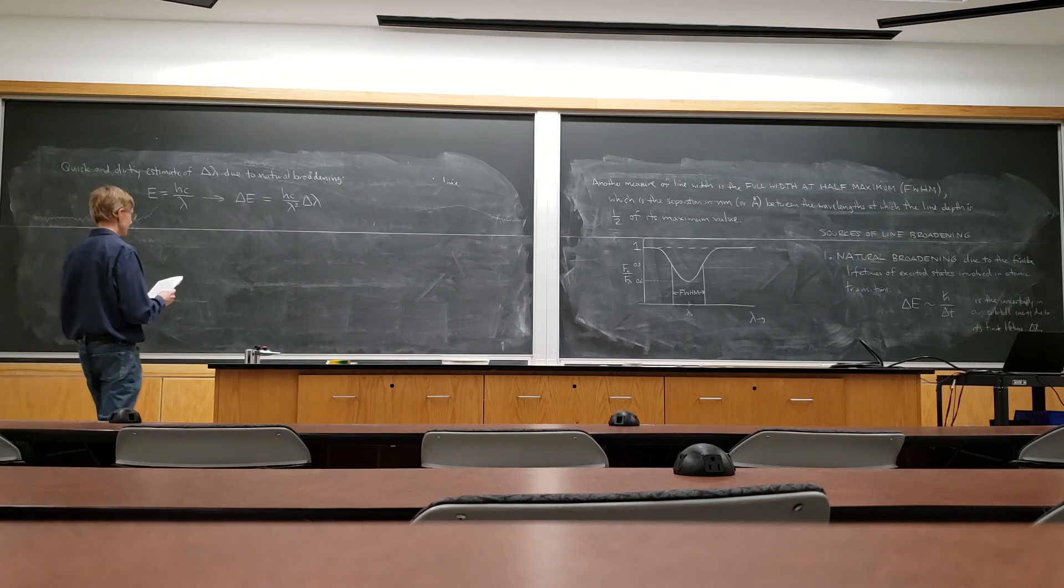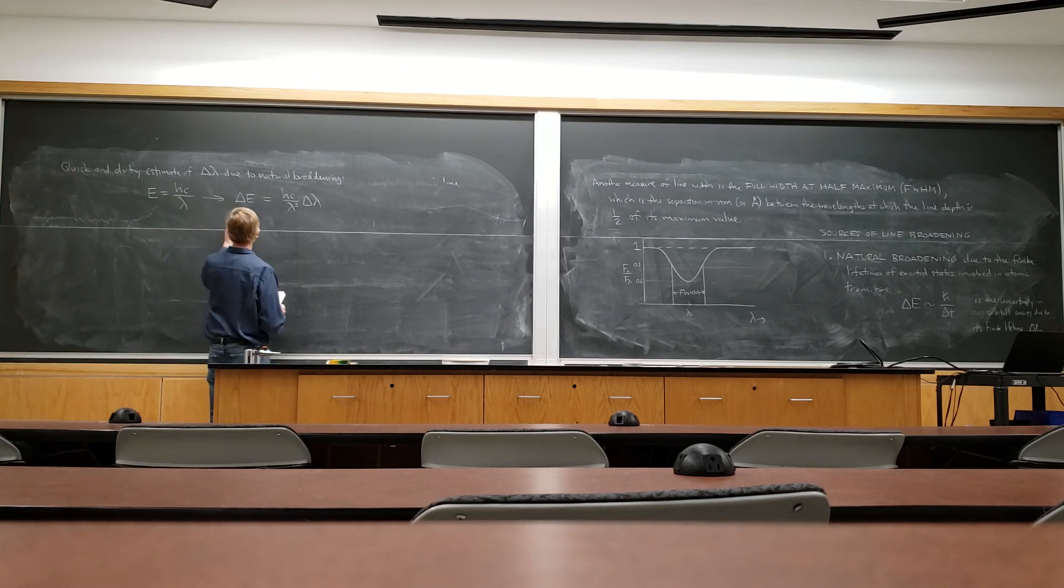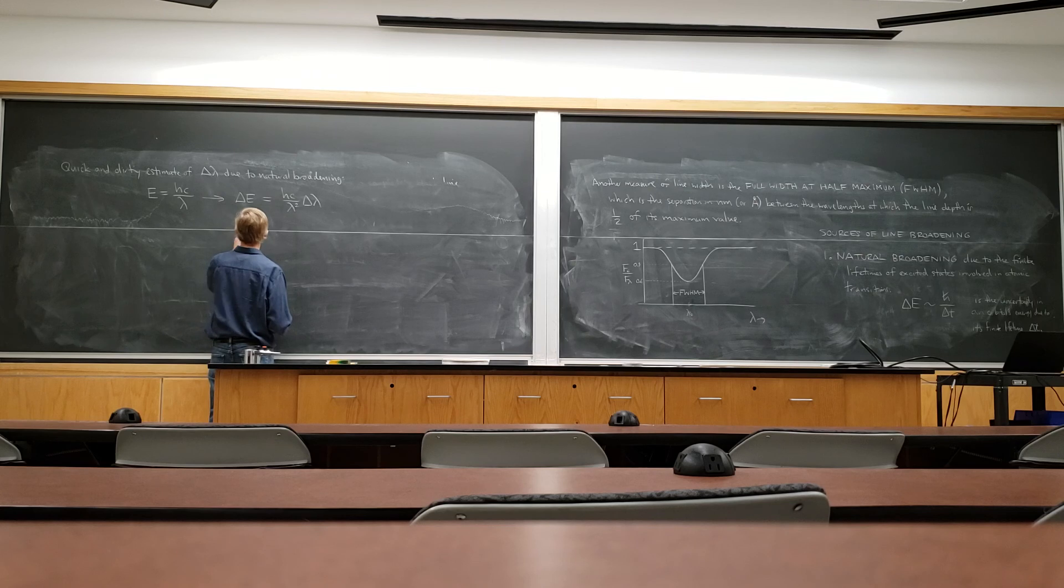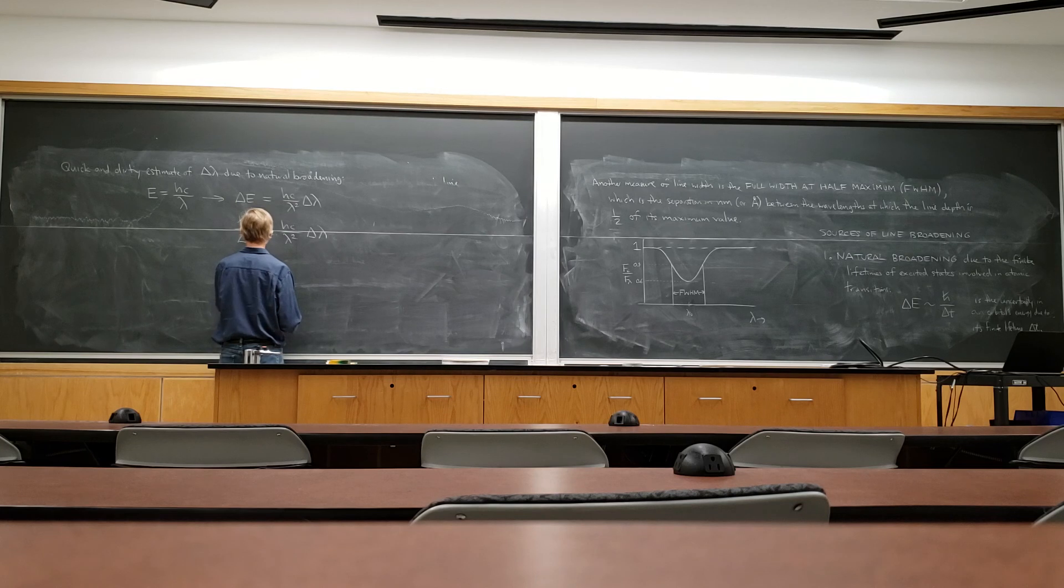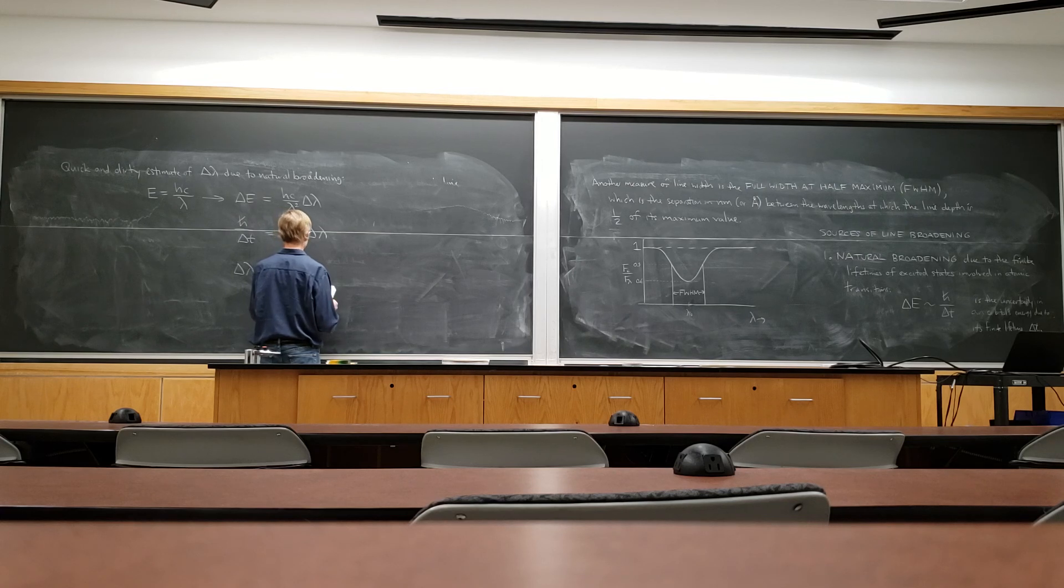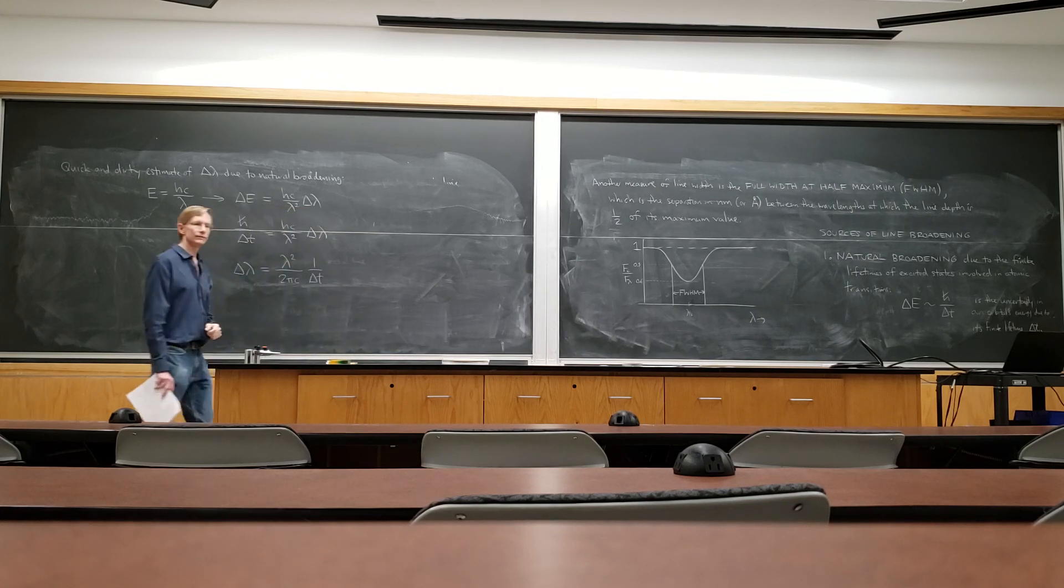So this would say that h-bar over delta t is hc over lambda squared delta lambda. And so that would give us the estimate that delta lambda would be lambda squared over 2 pi c times 1 over delta t, where delta t is the lifetime.